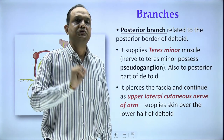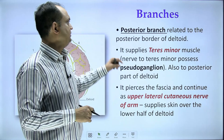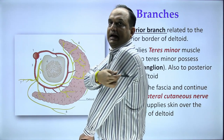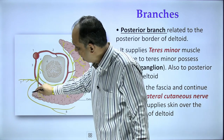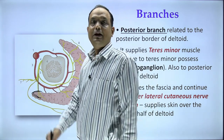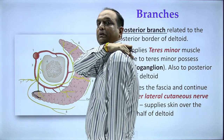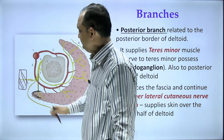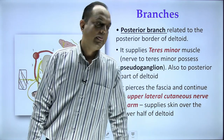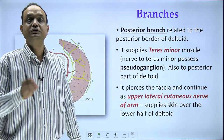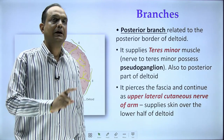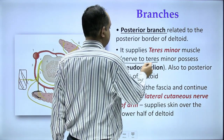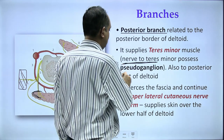Regarding the posterior branch, a typical exam question involves the pseudoganglia. The posterior branch approaches the posterior border of the deltoid, behind which lies the teres minor muscle. Teres minor, which comes behind the posterior border of the deltoid, is also supplied by the posterior branch of the axillary nerve. Before supplying teres minor, a small dilatation is seen, known as the pseudoganglia.